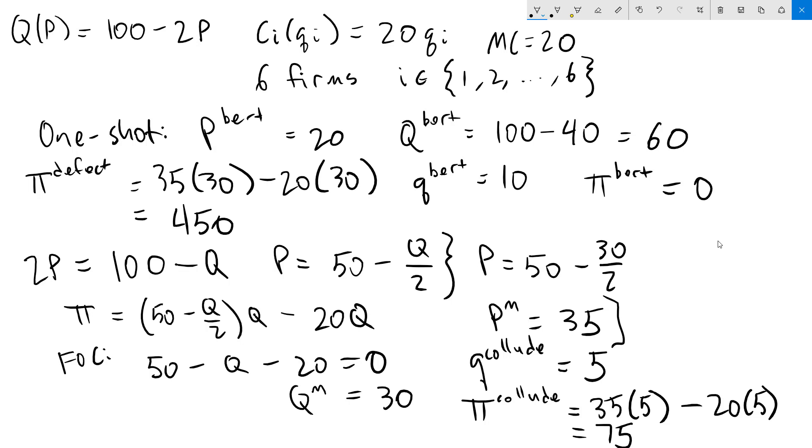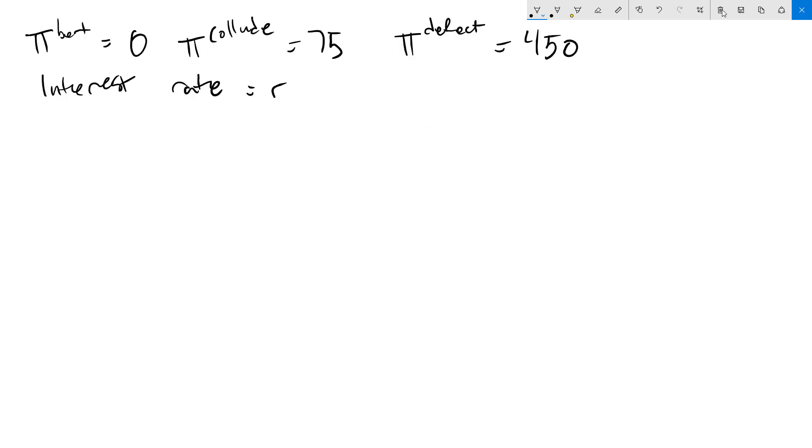This gives us all the information we need to know to figure out if it's possible to sustain a cooperative Nash equilibrium in an infinitely repeated setting. In the infinitely repeated Bertrand model, every single period, all six firms are going to choose their price simultaneously. After each period is over, they observe what happened, collect their profits, and we move on to the next period.